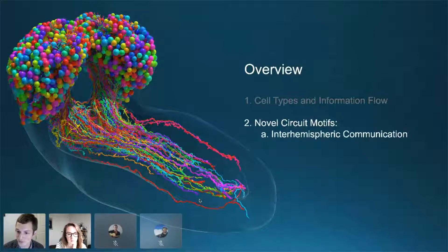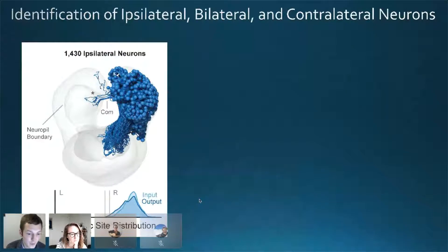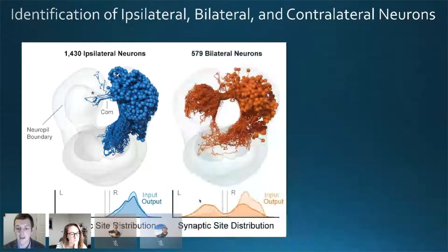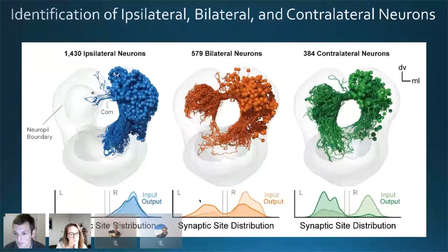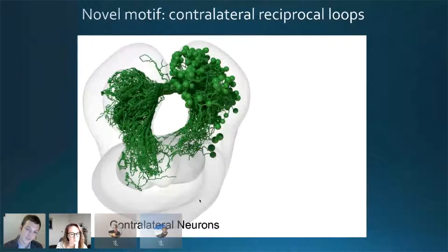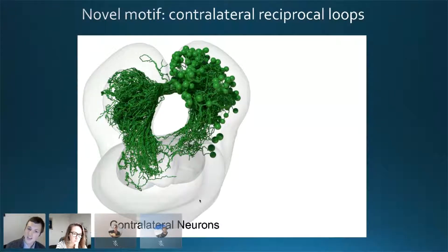I want to tell you about novel circuit motifs in interhemispheric communication and brain–nerve cord interaction. Because we have both brain hemispheres, we identified all ipsilateral neurons — neurons that receive input and output on one hemisphere — bilateral neurons that output to both hemispheres simultaneously, and contralateral neurons that output only to the opposite hemisphere. When we looked at contralateral neurons, we found that left-right homologous neuron pairs formed reciprocal loops with each other.